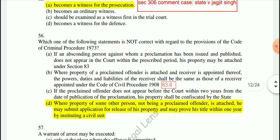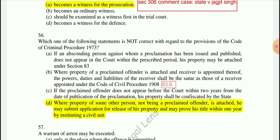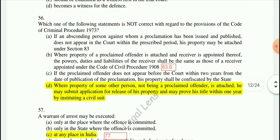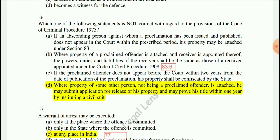Question 56: Which statement is not correct? The wrong statement is: where the property of some other person not being a proclaimed offender is attached, he may submit an application for release of his property and may prove his title within one year by instituting a civil suit — that is wrong. The remaining options A, B, and C are correct.